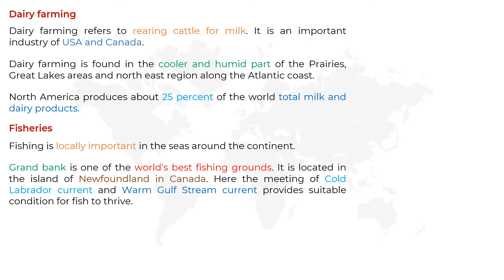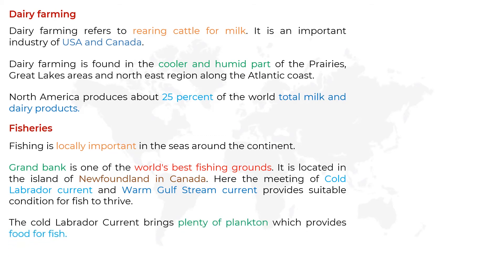The cold Labrador current brings plenty of plankton, which provides food for fish. Plankton is a small and microscopic organism floating in the sea or fresh water. It is largely found in cold waters and provides food for fish, making the Grand Bank area a rich fishing ground in North America.